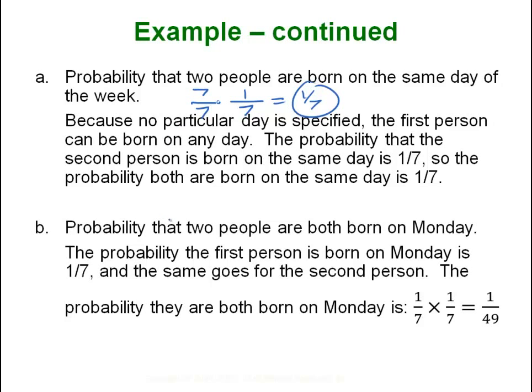However this question says they both have to be born on a Monday. So here is my two dashes and since they both have to be on Monday the first person only has 1 good choice out of 7. The second person also has 1 out of 7 and now we have 1 out of 49. Hugely different with just a slight difference in the wording.